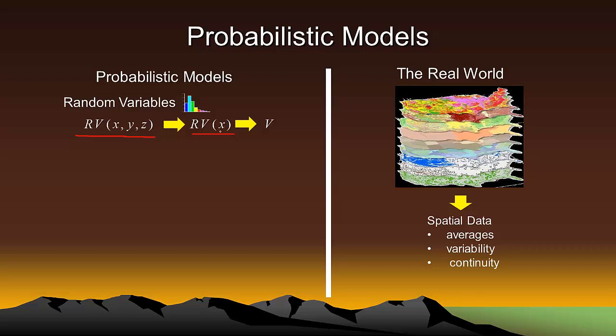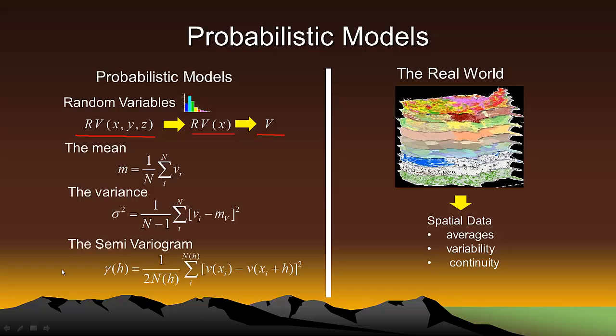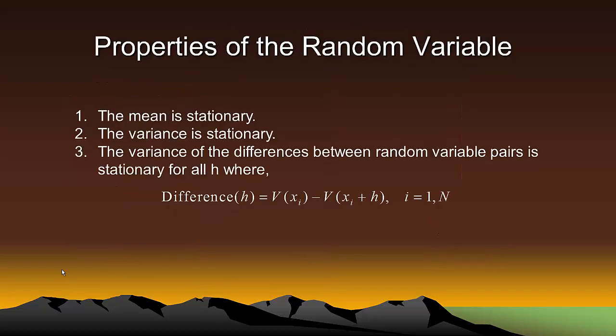Since the random variable consists of a distribution or histogram of all possible values, we can calculate the mean, the variance, and the semi-variogram value given by these equations where lowercase v are outcomes of the random variable. There are three properties that random variables must have to enable statistical inference of population statistics. One, the mean must be stationary. Two, the variance must be stationary. And three, the variance of the differences between random variable pairs must also be stationary for all h.